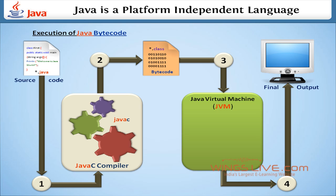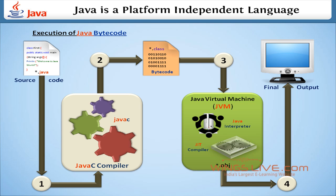Bytecode is a machine language of the Java virtual machine, or JVM. Java interpreter and JIT compiler are present inside the JVM. The JVM converts the bytecode (.class) into executable code (.obj) with the help of the interpreter or JIT compiler as needed.